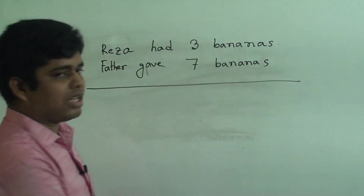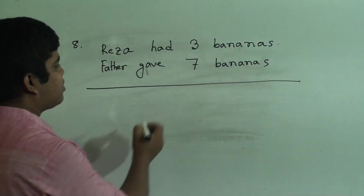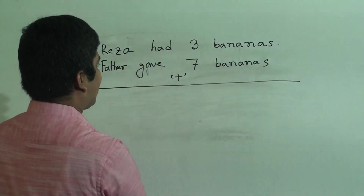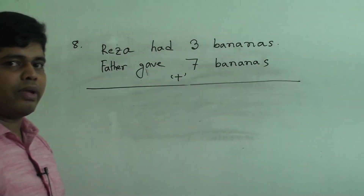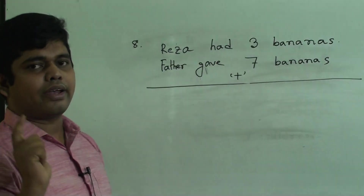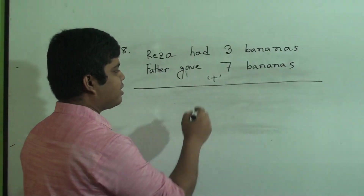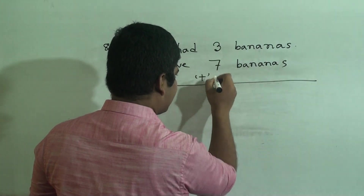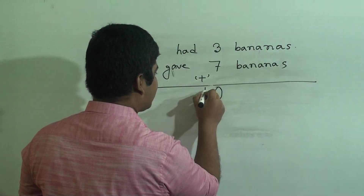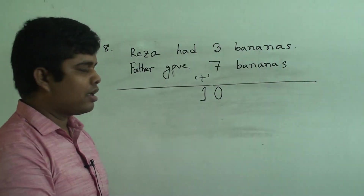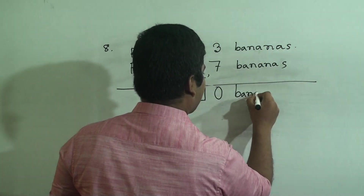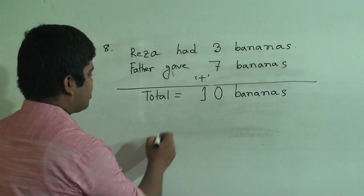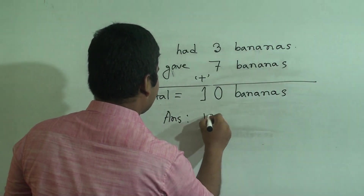Now we need to find out the total amount of bananas, so we do addition and give a plus sign. Now 7 plus 3: 7, 8, 9, 10. If we add 7 with 3 we get 10. The 0 is written under the 7, and the 1 is carried here. So 10 bananas. Here we write total. As our solution is done, we must write the answer.